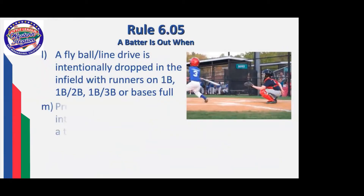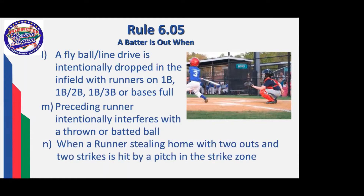If you have a line drive or fly ball which is intentionally dropped in the infield — you won't see this very often — but it's one of those situations where we're trying to avoid the unwarranted double play. If a preceding runner intentionally interferes with a thrown ball, or in the upper divisions when a runner is stealing home with two outs and two strikes and that runner is hit by a pitch in the strike zone — that's an upper division situation you might catch once in your career. Going back: if a line drive or fly ball is allowed to drop intentionally but untouched, this rule does not apply. You can simply let it drop and then make the play. But if you glove it and then drop it, this rule does apply.